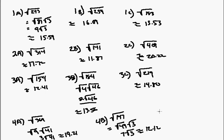4c: the square root of 334. That can't be reduced or simplified, so that's approximately 18.28.